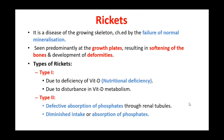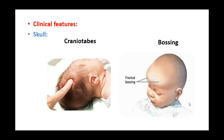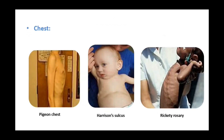Rickets is a disease of a growing skeleton, mainly characterized by the failure of normal mineralization of the bone. It is seen mainly at the growth plate, resulting in the softening of the bone and the development of deformities, as seen in the images showing different clinical features.